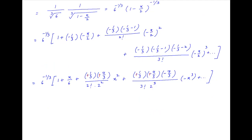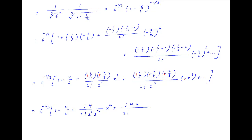Now in each of these terms in the square brackets the minus signs cancel out, and therefore the value of this expression is equal to 6 raised to the power minus 1 upon 3, times in brackets: 1 plus x upon 6, plus 1 times 4 divided by 2 factorial times 2 squared times 3 squared, multiplied by x squared, plus 1 times 4 times 7 divided by 3 factorial times 2 cubed times 3 cubed, multiplied by x cubed, plus and so on.